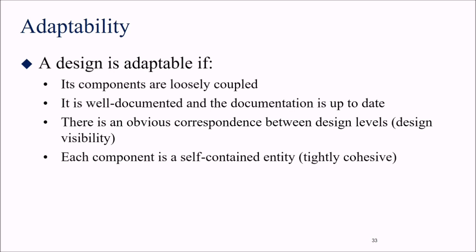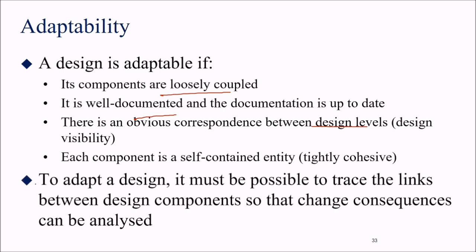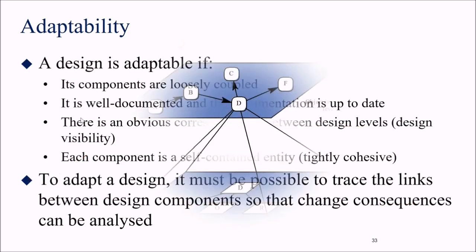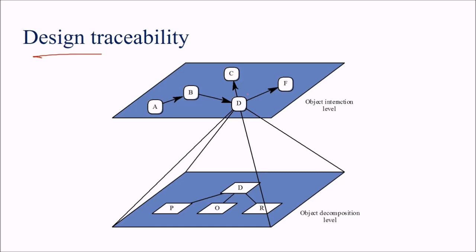A design is adaptable if its components are loosely coupled, well-documented with up-to-date documentation, have an obvious correspondence between design levels, and each component is self-contained and tightly cohesive. To adapt a design, it must be possible to trace the links between design components so that the consequences of a change can be analyzed. Design traceability means that whatever you are designing — from the object level interaction to the composition level — should be traceable.